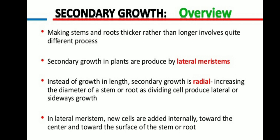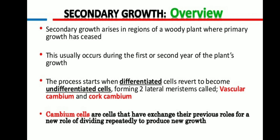Secondary growth is radial, increasing the diameter of stem or roots, by dividing cells which produce lateral or sideways growth. In the lateral meristem, new cells are added initially towards the center and towards the surface of the stem or roots. Secondary growth arises in the region of woody plants where the primary growth has ceased.